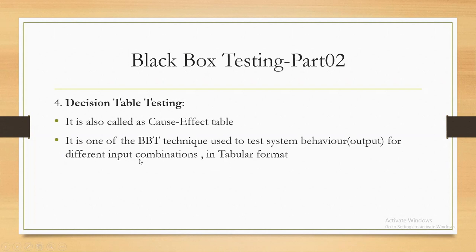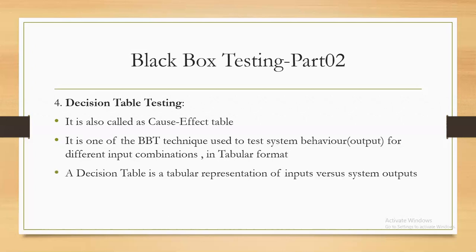A decision table is one of the blackboard testing techniques used to test system behavior — specifically the output for different input combinations — in table format. A decision table is a table representation of inputs versus system outputs.